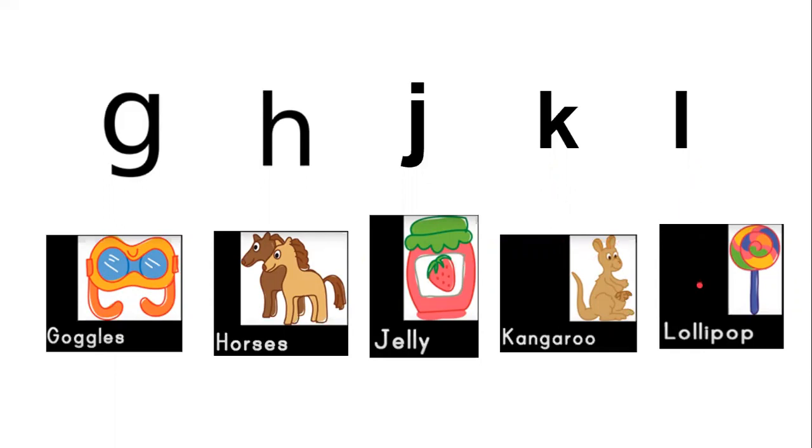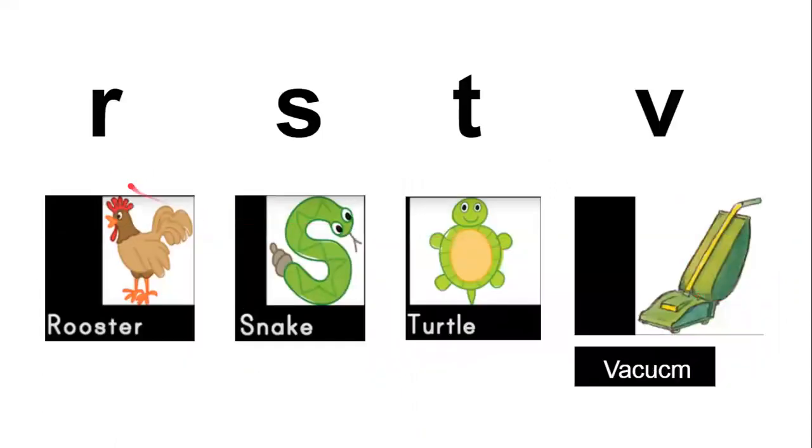Hey children, next. M, mountain. N, needle. P, paddle. Q, queen. R, rooster. S, snake. T, turtle.